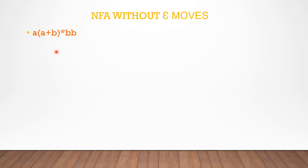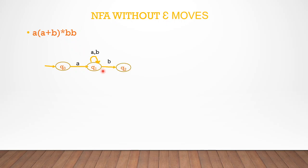A or B star — that is a loop. A loop will be a and b, then BB. Q0 — that symbol is a. A comes to Q, then we use (a plus b) star, then BB: B goes to Q2, then B goes to Q3.